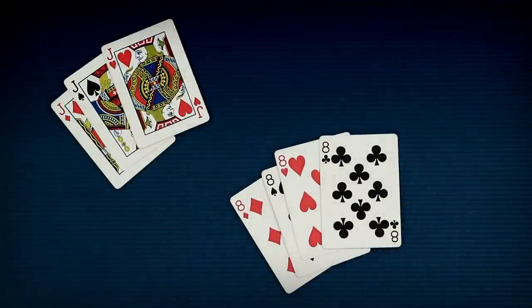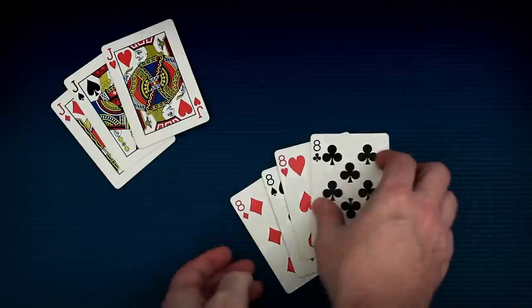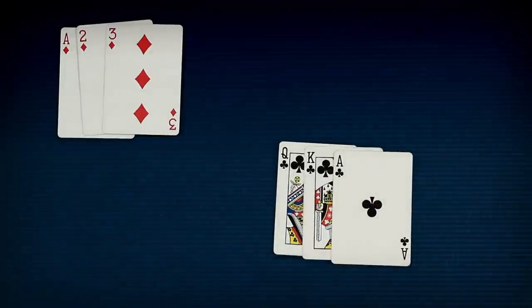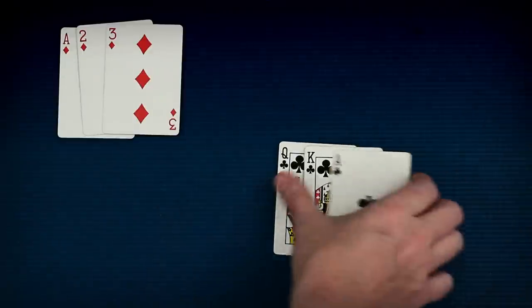The other type of meld is called a run. A run is three or more cards of the same suit that are in sequential order. Ace, two, three of diamonds. That makes a run. In a run, ace is always low. For example, queen, king, ace is not a run because ace is always low in a run.